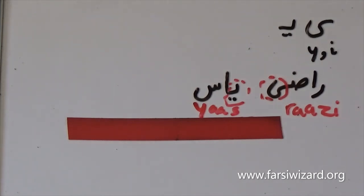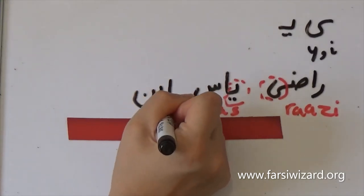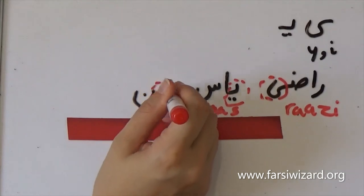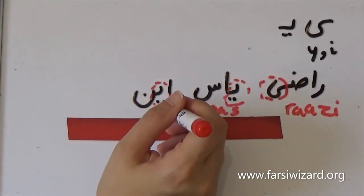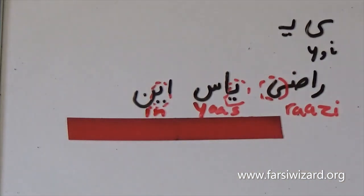So here we have in, the word in, which literally means 'this' in Farsi. Okay, so quickly: if ye is at the end, you can see in the first version how it looks like, and if it's at the beginning or in the middle, it's the version with two dots under.